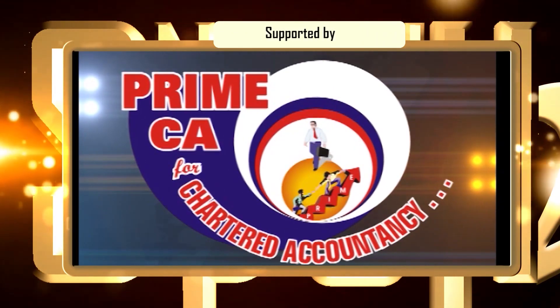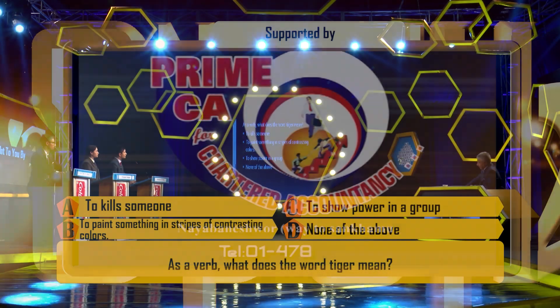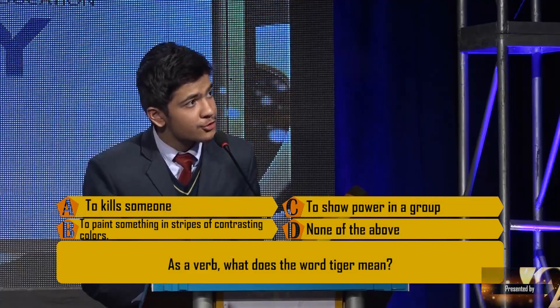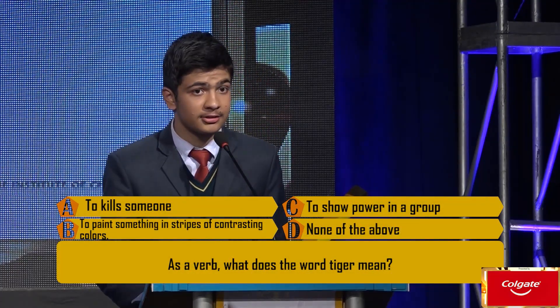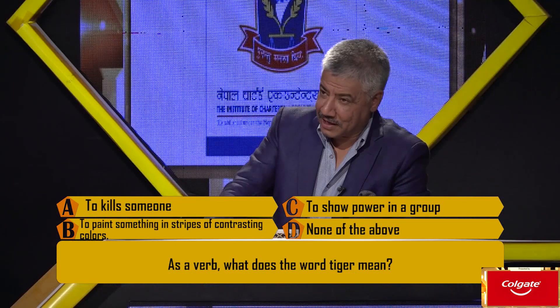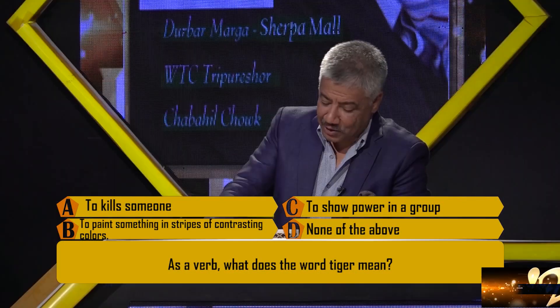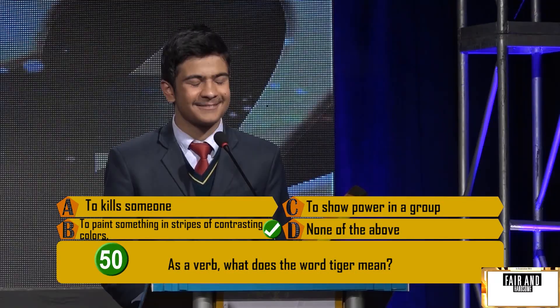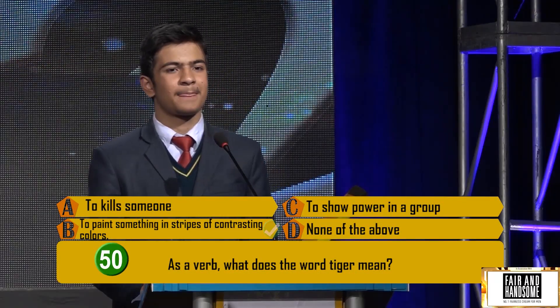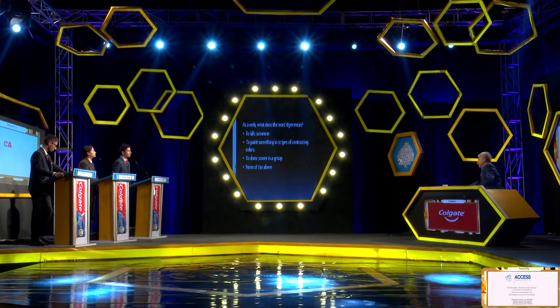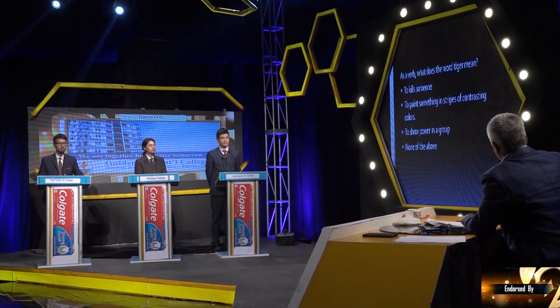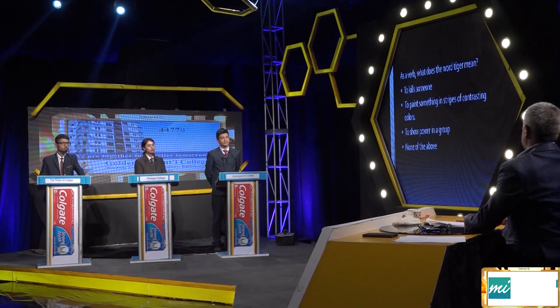No, that's not the correct answer. You can have one more pick. Option B — to paint something in stripes of contrasting colors. You sure, or are you just guessing? Guessing. You guessed it right! As a verb, 'tiger' means to paint something in stripes of contrasting colors.